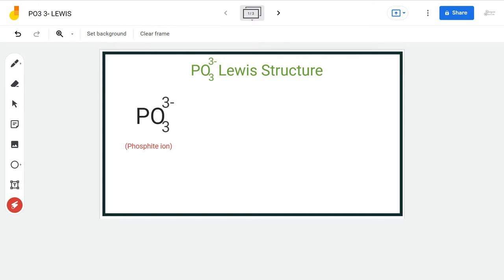Hello guys, welcome back to our channel. In this video, we will discuss the Lewis structure of PO3 3- ion. It's a chemical formula of Phosphite Ion.